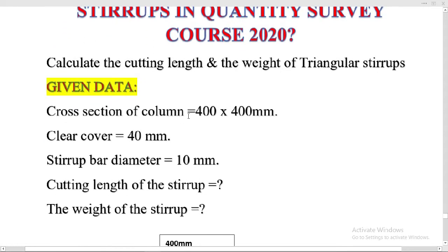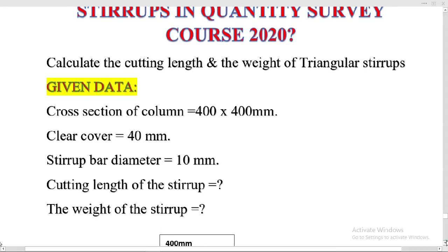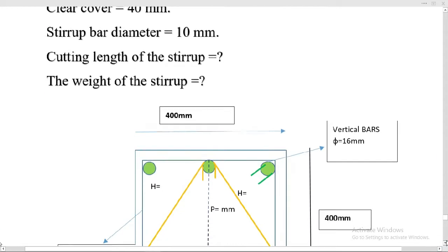Given data: we have a column with a section of 400 by 400 millimeters, clear cover provided 40 millimeters from all sides — both sides, top, and bottom. Stirrup bar diameter is 10 millimeters. We have to calculate the cutting length of the stirrup and the weight of the triangular stirrups.